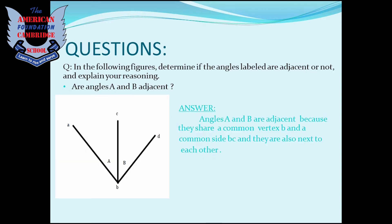In the following figures, determine if the angles are adjacent or not and explain your answer with reasons. So tell me, are angles A and B adjacent? The answer is angles A and B are adjacent because they share a common vertex B and a common side BC, and they are also next to each other.